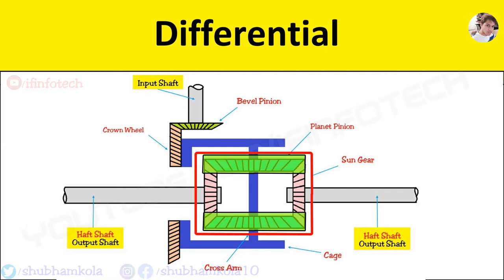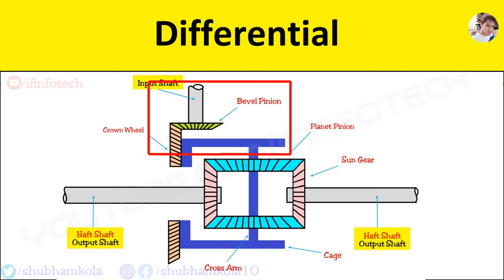The planet gears are freely mounted on cross arm. The cage together with bevel pinion is secured in differential cage which is bolted to crown wheel of final drive. The crown wheel is meshed with curved teeth bevel pinion which is rotated by propeller shaft.